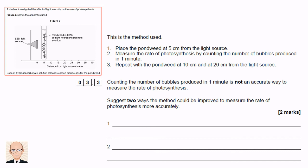We're told that counting bubbles isn't an accurate way to measure the rate of photosynthesis, and we're asked to suggest two ways to measure it more accurately. So rather than count the bubbles, we could collect and measure the volume of gas produced. Or, if we continue to count bubbles, we could do it over a longer period of time.